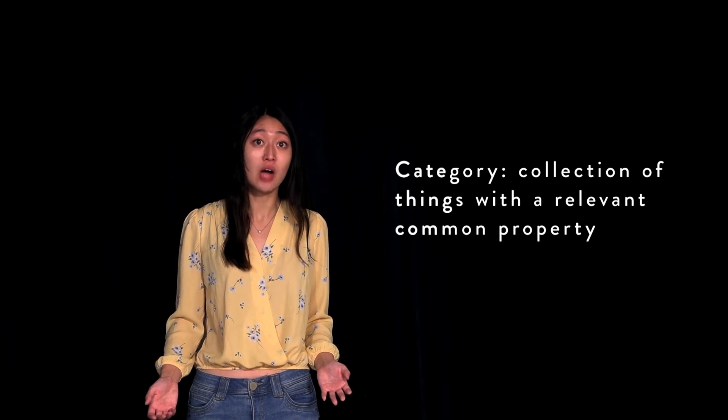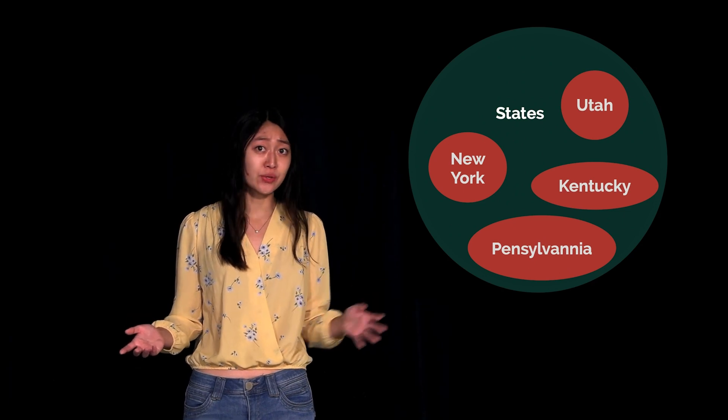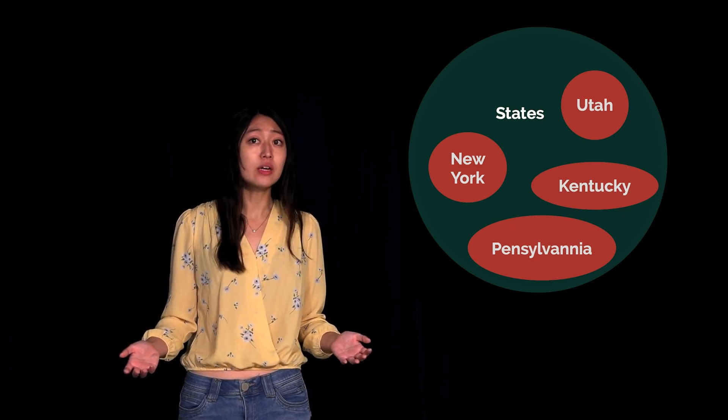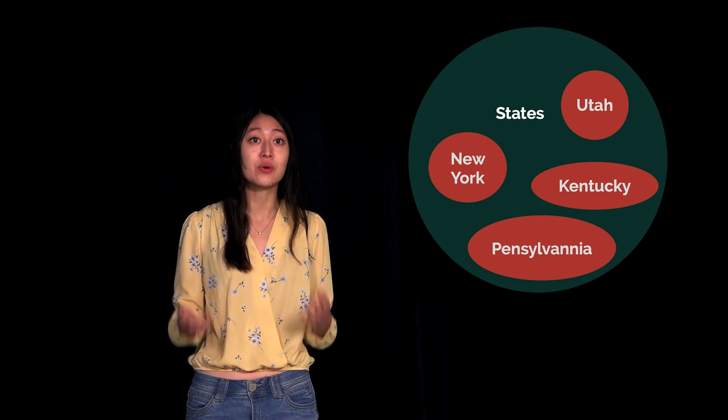There's an intuitive difference between the two types just by giving examples, but the technical difference can be described in terms of categories. A category is roughly a collection of things that all have some sort of relevant common property. For instance, all of the particular chairs in existence are members of the category 'chairs.' All of these chairs have a relevant common property — they are all chairs. This is why 'chairs' is a categorematic term. It refers to the category of objects that are the thing. Here's a diagram to visualize the category 'states,' where anything inside the circle is a member of the category.